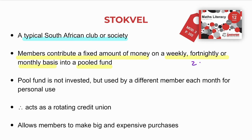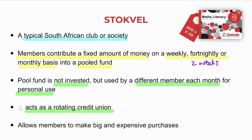Fortnightly means every two weeks. The money that everybody has contributed to this pooled fund is not invested, but it is used by different members each month for their personal use. In effect, it acts as a rotating credit union — you contribute each month, and when everybody has had a turn, it rotates in a circle, and by the time it gets to you, that money is yours to use.